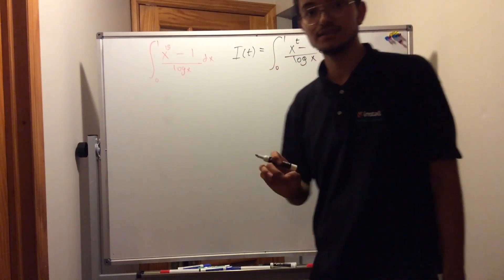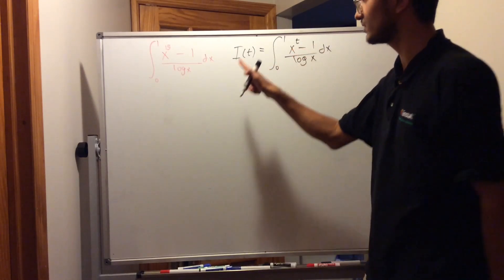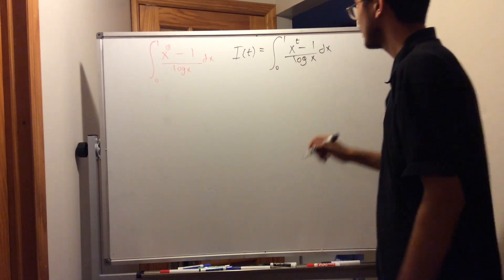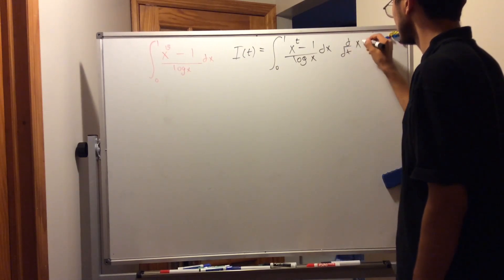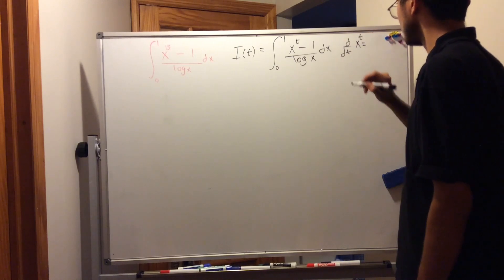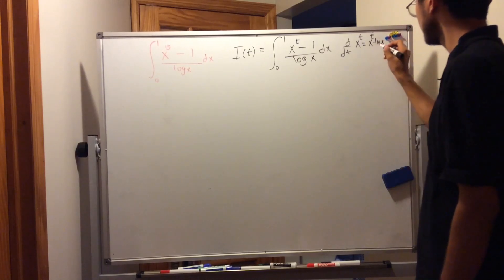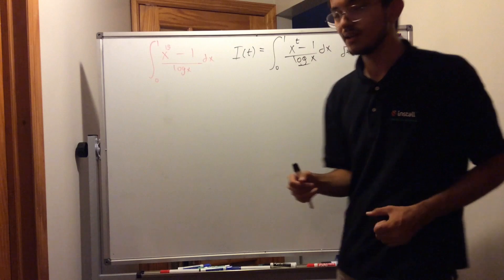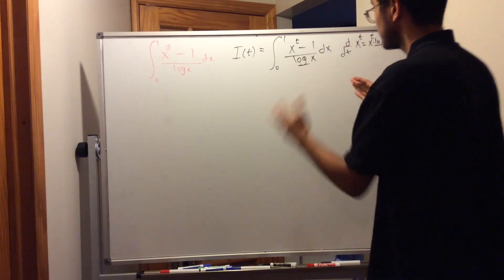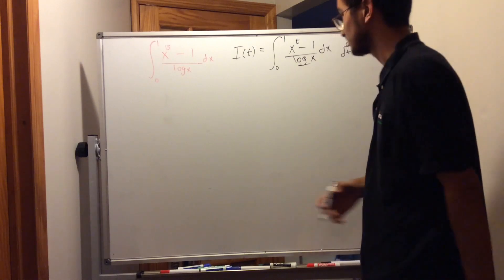If we differentiate under the integral sign with respect to t, remember that the derivative with respect to t of x to the power of t is x^t times ln(x). And ln(x) and log(x) have something in common — you can sort of eliminate something, but not completely cancel log(x) yet.